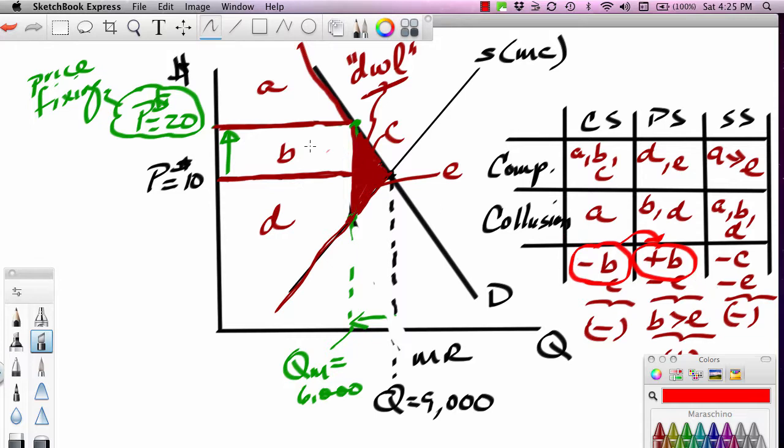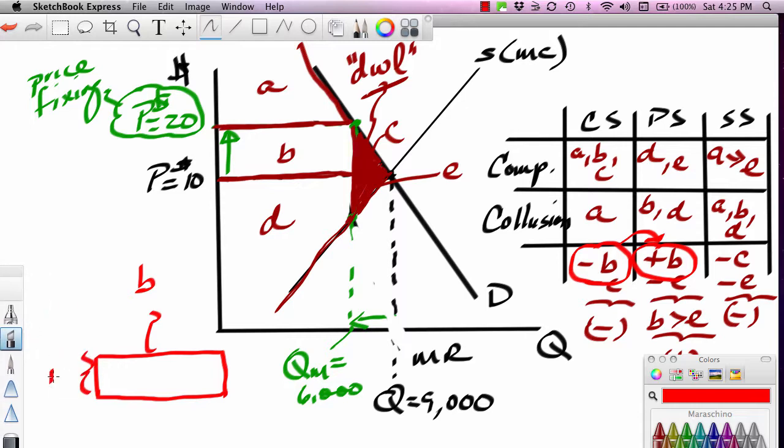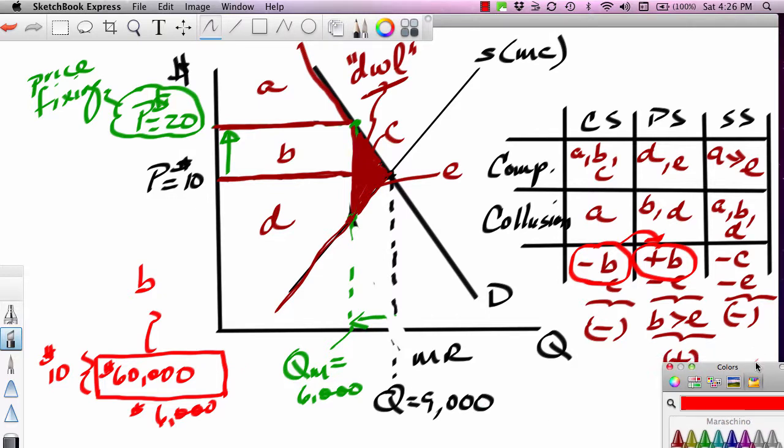And you can actually calculate the size of B there. In fact, you could calculate the areas of all these. We could actually calculate the size of that. But that area B is a fairly large chunk of money. It's coming right out of the pockets of consumers. Here's B. What's the width of that? The width of that is 10. And what's the length of that box? The length of that box is 6,000. So that box alone, which is area B, the area of that box is 60,000. That's a 60,000-dollar wealth transfer from whom? From consumers to producers. And the government is trying to prevent that from happening using what are called antitrust laws.